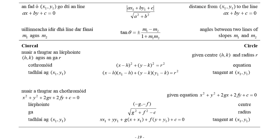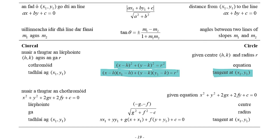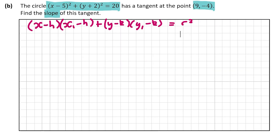On page 19 of the log tables, our circle is given in this form and there's a formula for the tangent at the point (x1, y1). I've brought this formula directly from the log tables. Let's see what values we can fill in.